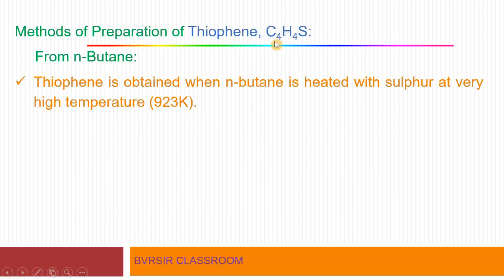Let us start. Thiophene has the molecular formula C₄H₄S. It is a sulfur-containing heterocyclic compound.